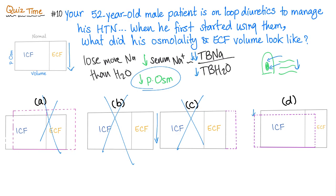D is the only answer where the plasma osmolality decreased on the y-axis. So D is the answer. When water shifts from the ECF into the ICF, the ECF is going to shrink — the volume decreases on the x-axis — and the ICF is going to expand because water is moving into the cell. If you got it right, wonderful. If you got it wrong, learn from your mistakes.